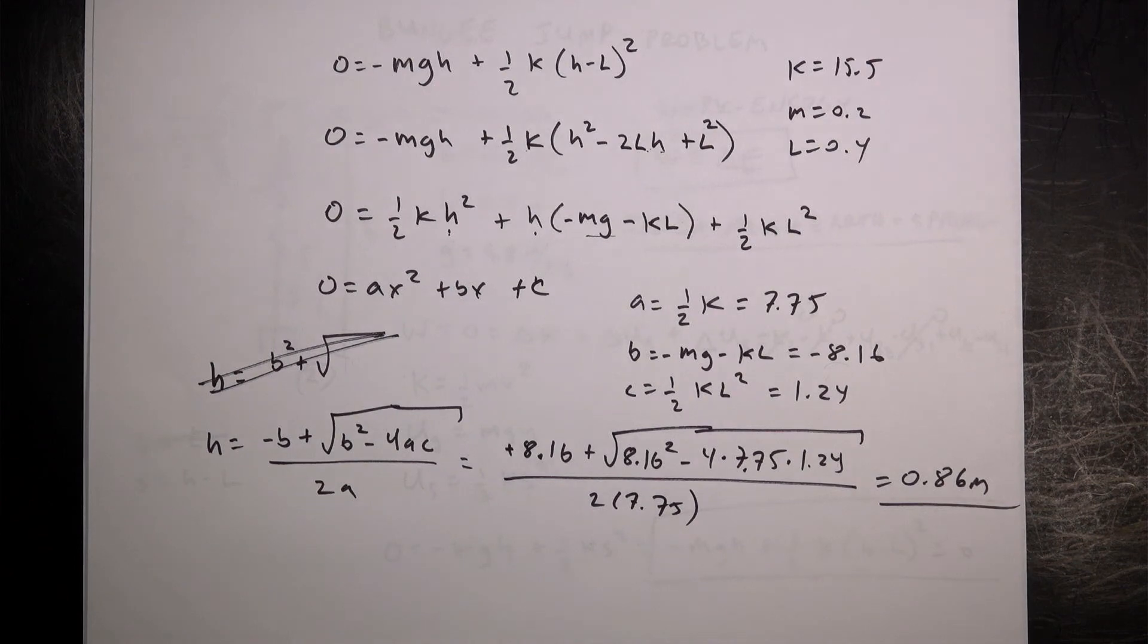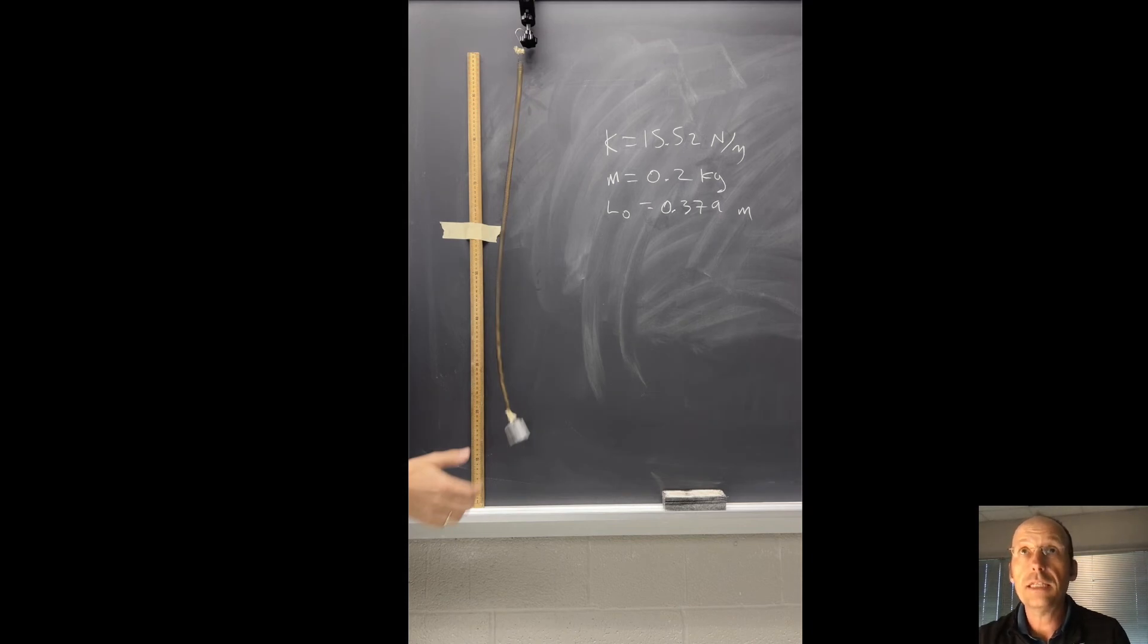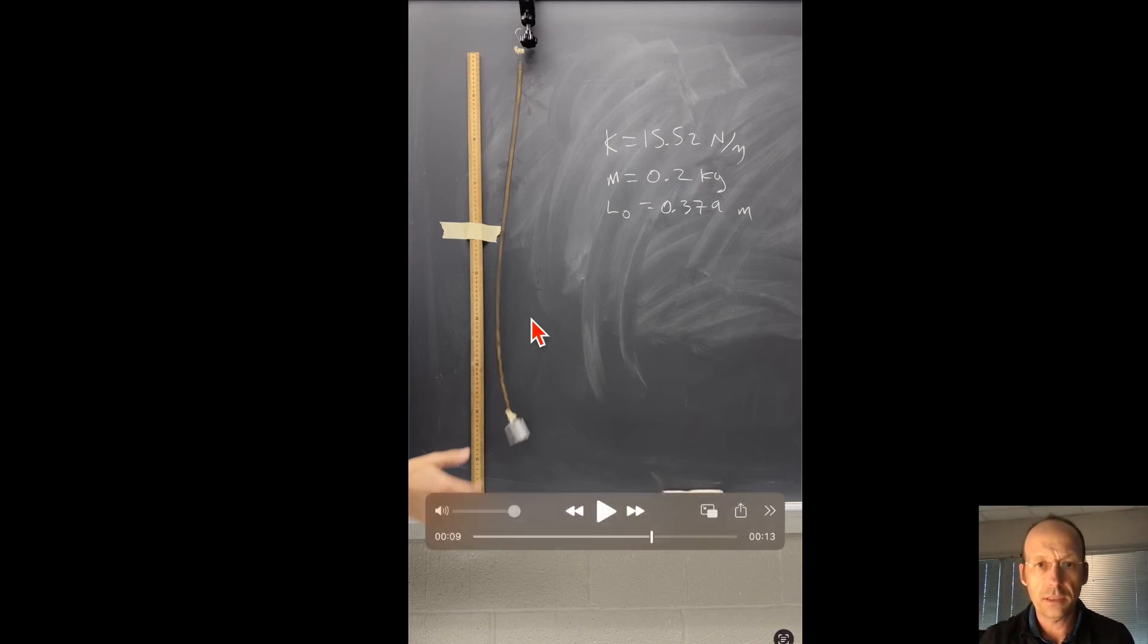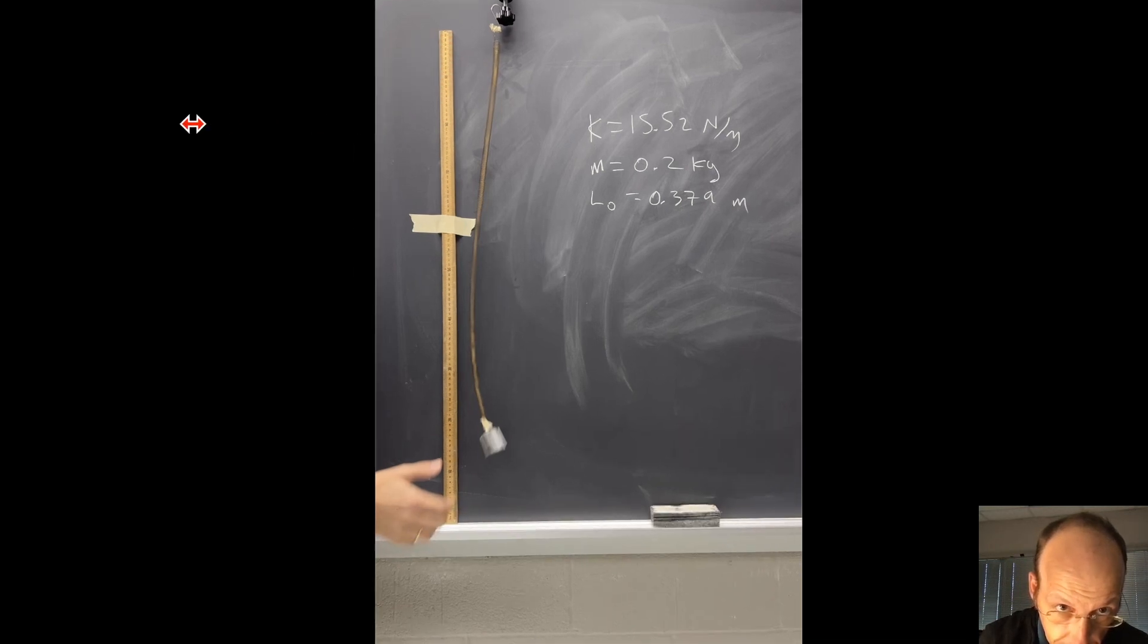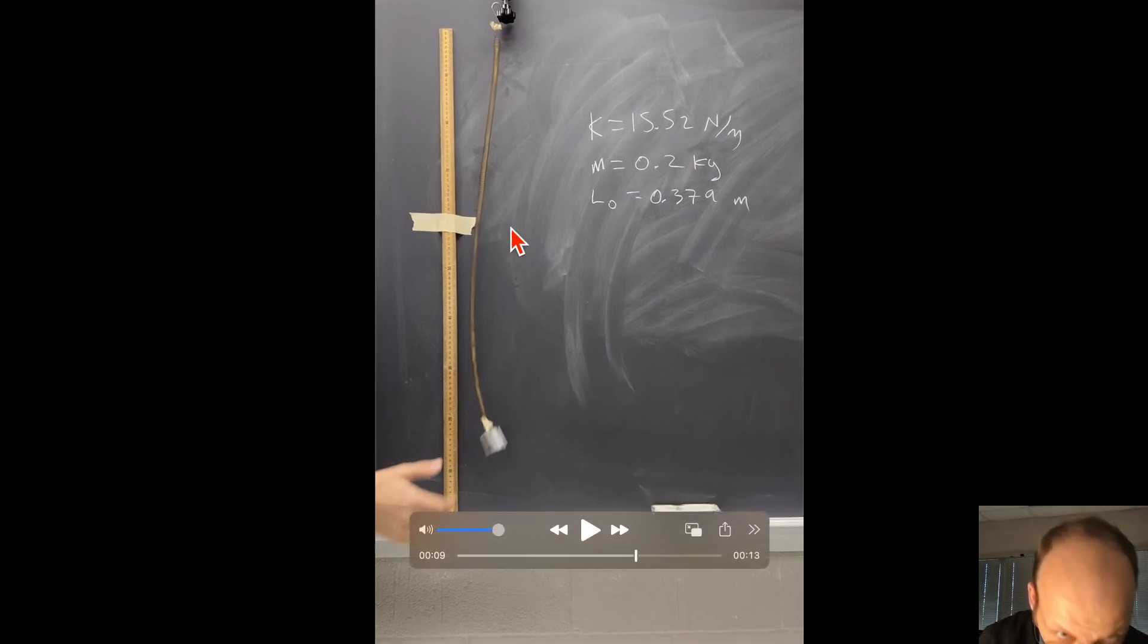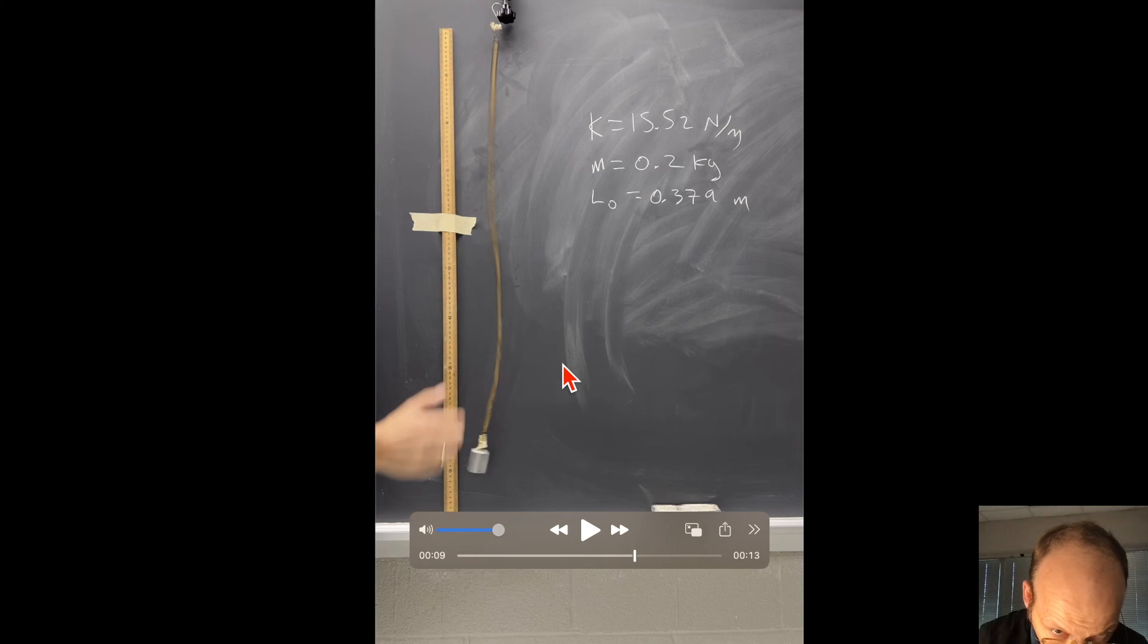So this is a meter stick. I have the 0 up here. Do I have the 0 up here? Let's see. The 0 is down at the bottom. So if you look at the lowest point, that's right about 0.12 meters. So if you take 100 minus 0.12, you get 0.88. I calculated 0.86.